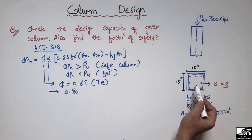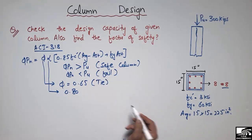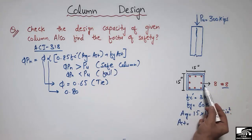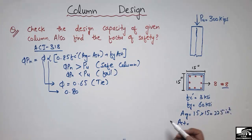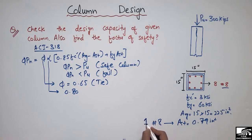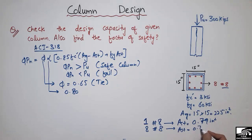Ast is the area of steel used in this RC column. The area of one Number 8 bar is 0.79 in². Since there are 8 bars, we multiply: Ast = 8 × 0.79 = 6.32 in².